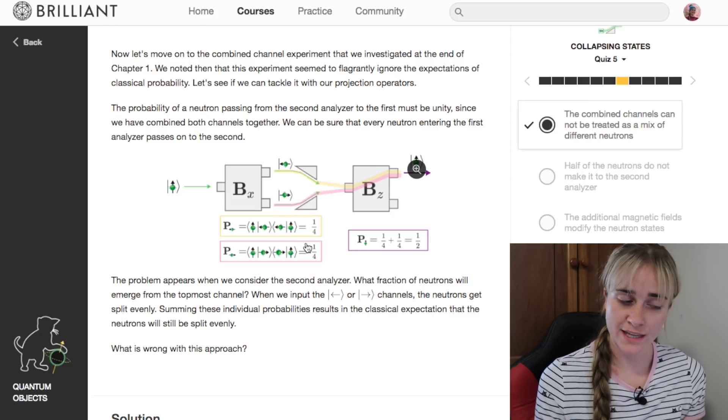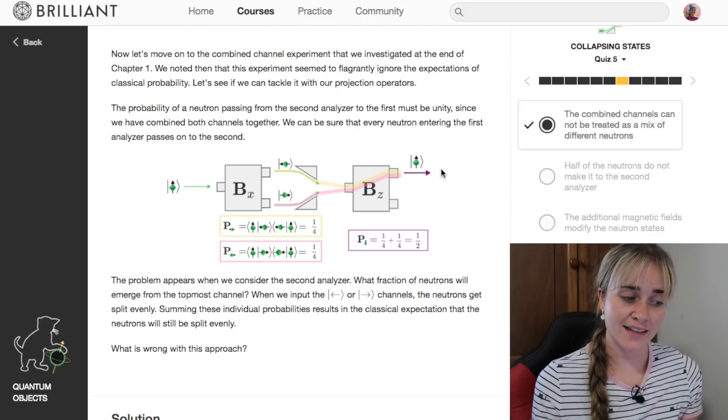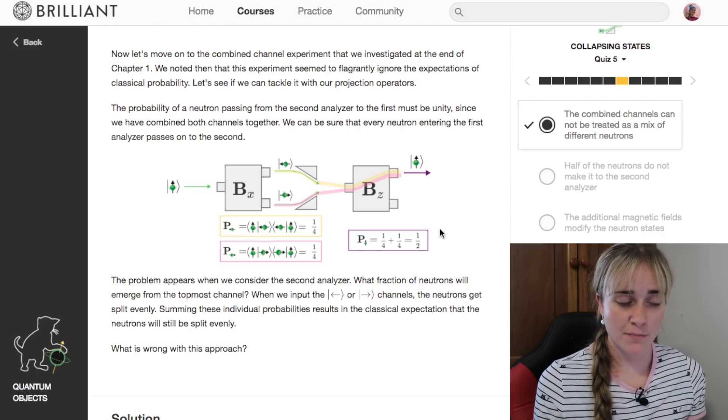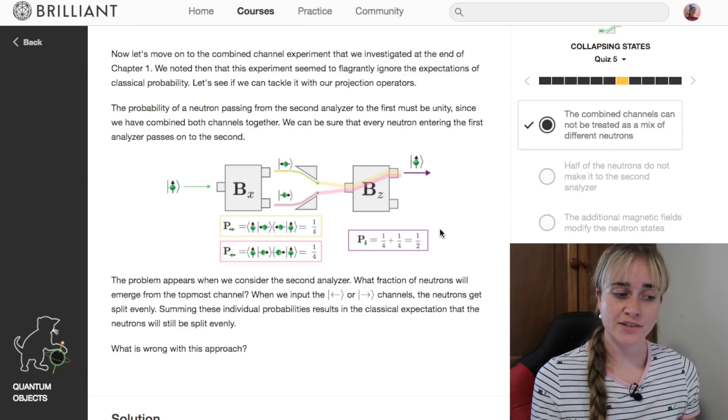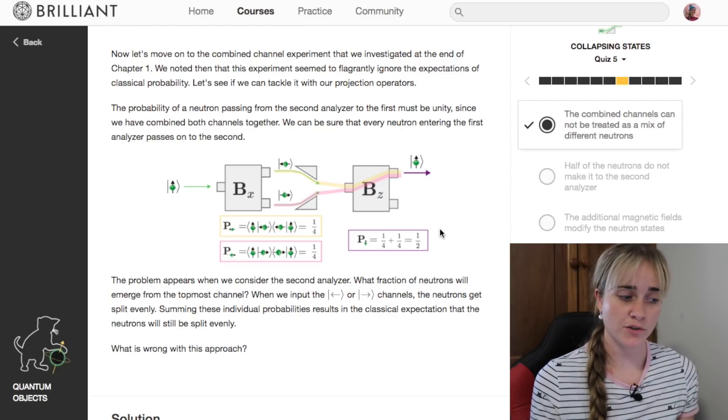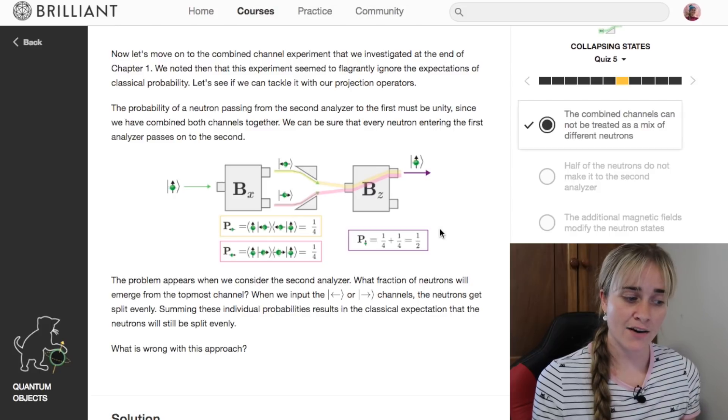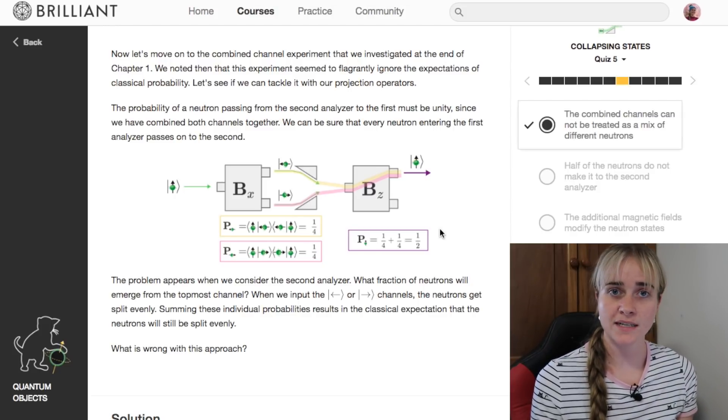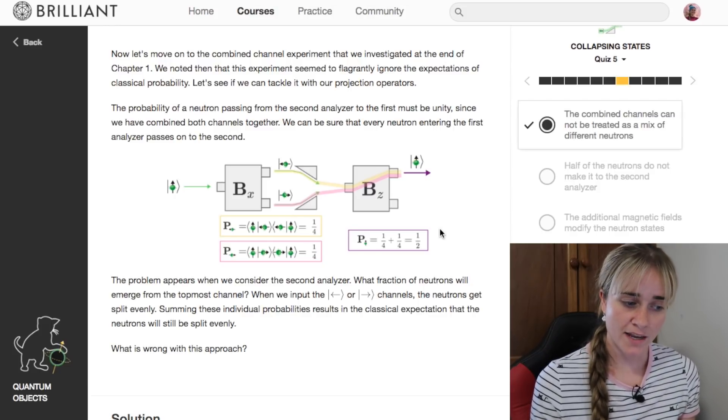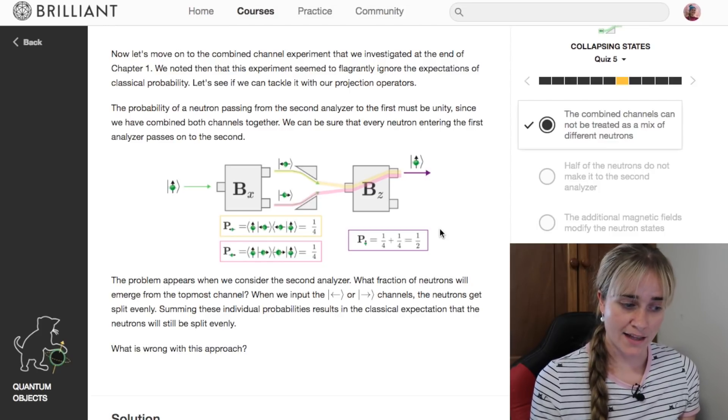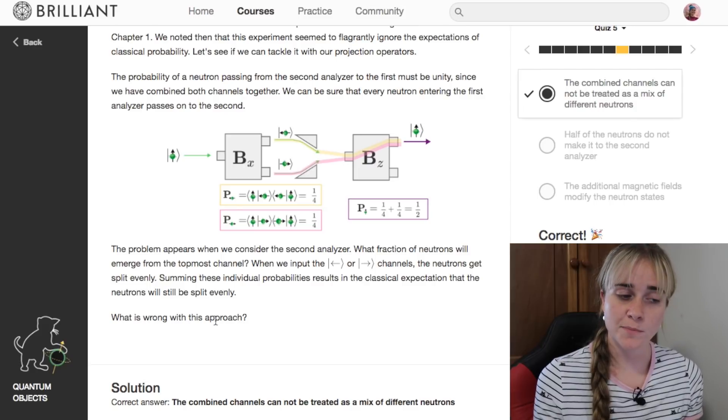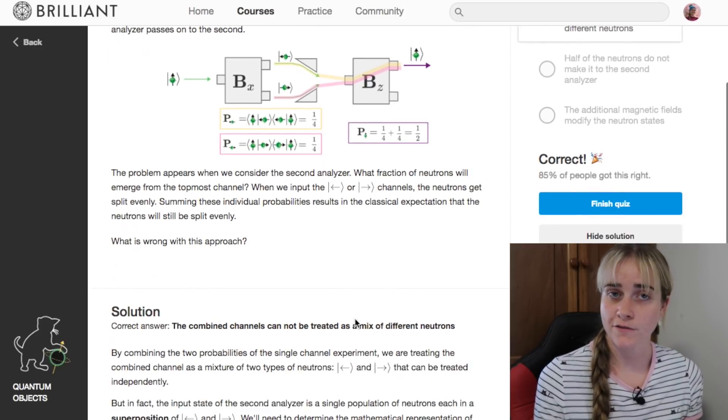Brilliant says what is wrong with our approach? The answer is that this combined channel of spin left spin right neutrons can't be treated as just a mix of different neutrons, but instead they are a superposition of spin left and spin right.